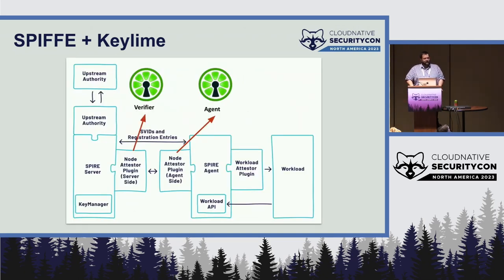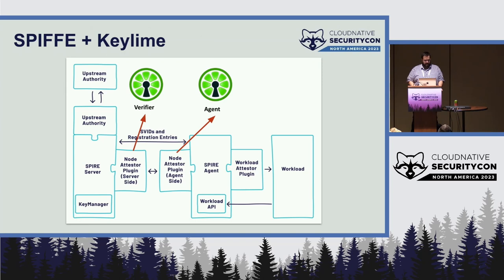The setup is similar to the Sigstore integration — the node attestor on the server side talks to the KeyLime verifier, and the agent-side attestor talks to the KeyLime agent to get TPM and hardware attributes. If something modifies your boot sequence, if someone injects a kernel parameter you don't approve of, or if somebody modifies the KeyLime agent or a file on your system, KeyLime can fail the attestation. Then when SPIRE tries to issue an identity for that node, it says no — the node does not pass attestation. None of the identities would work and none of the credentials could be compromised.